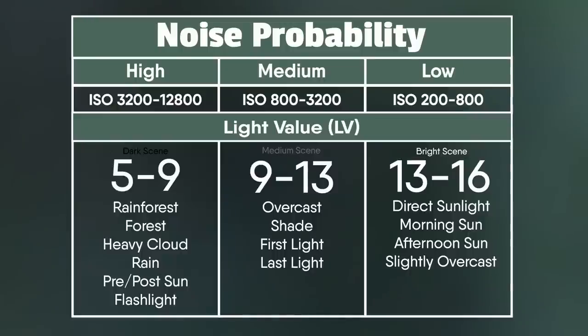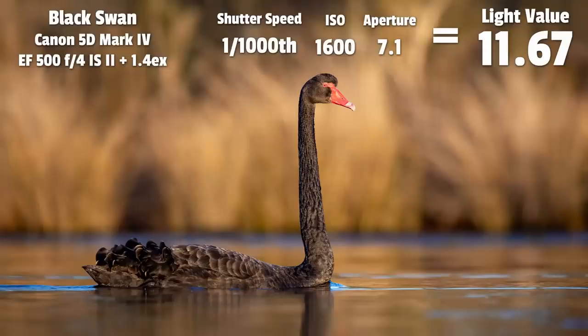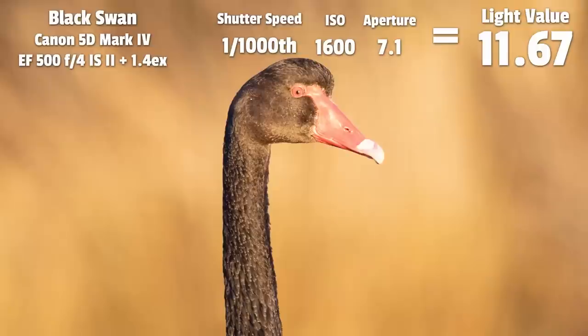In the middle of the diagram — the medium chance of getting noise — the light value is between 9 and 13 and you're using ISOs generally between 800 and 3200. Noise is visible but it's definitely manageable. Here's an example of a black swan. Even though we had a little sunlight, the bird is dark and the background was slightly dark, giving a light value of 11.67. I took this at ISO 1600 and in the raw file the noise is barely noticeable.